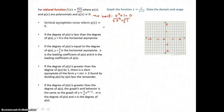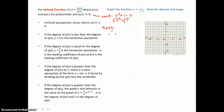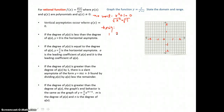Then I'll check for horizontal asymptotes by comparing the degrees of the polynomials, top and bottom. The degree of the top polynomial is 1, since we have x to the first power. And in the denominator, the degree of our polynomial is 2, since we have x squared. Since the degree of the top is less than the degree of the bottom, the x-axis is our horizontal asymptote, or y equals 0.